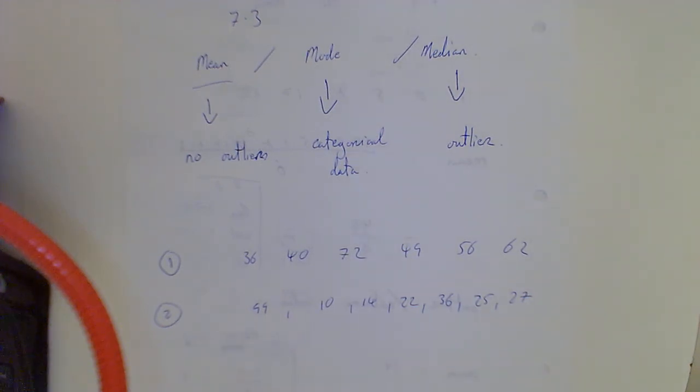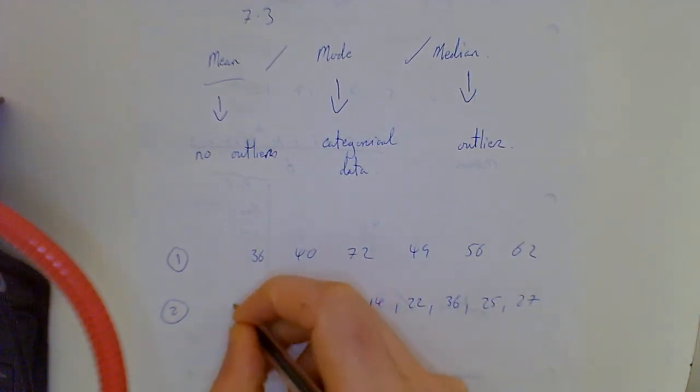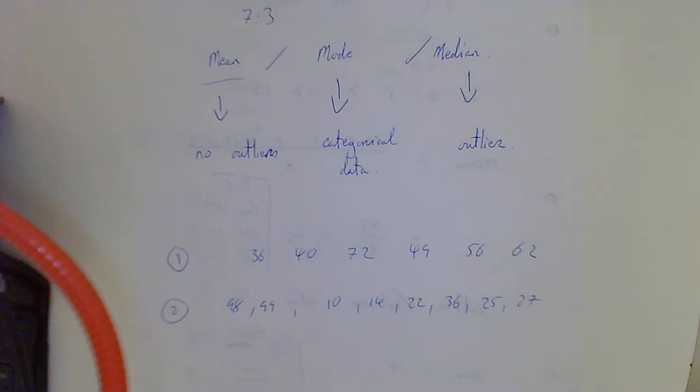Yeah, it sticks out because the logic behind that is if you got two people in the class, they'll bring the average up. So how many is in the class? There's one, two, three, four, five, six, seven. Seven people.